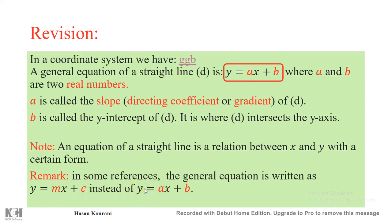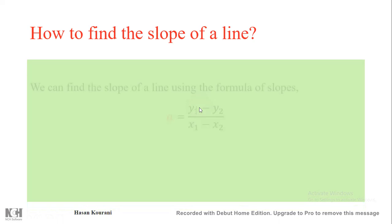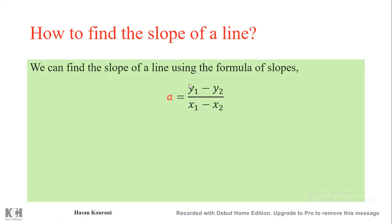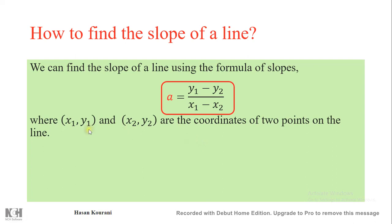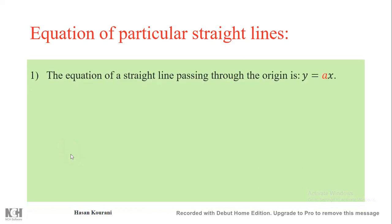How to find the slope of a line: if we know the equation of a straight line and want to find the slope, either from the equation or from two particular points on the line, the formula for slope is a = (y1 − y2) / (x1 − x2), where (x1, y1) and (x2, y2) are the coordinates of two points on the line.